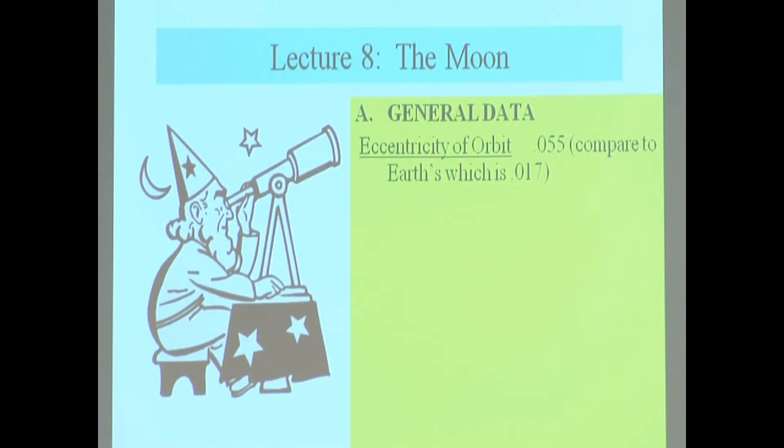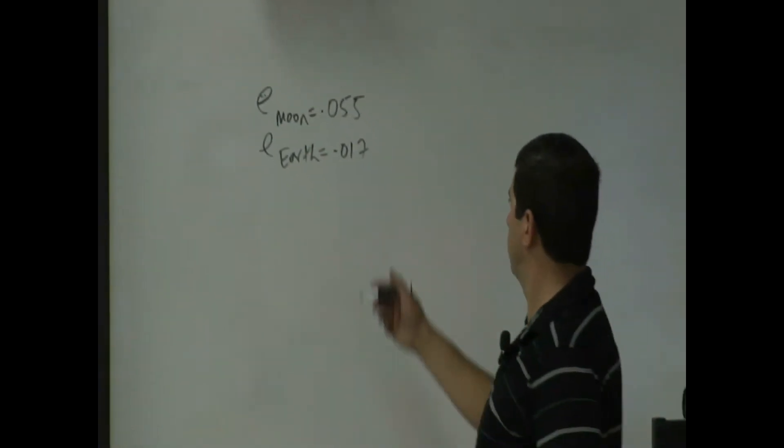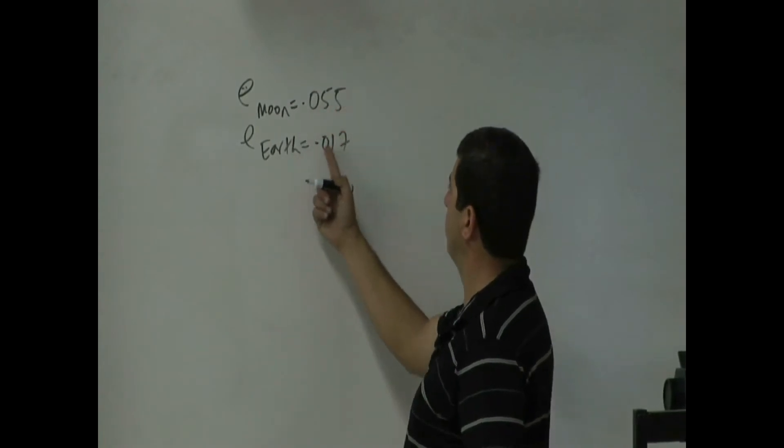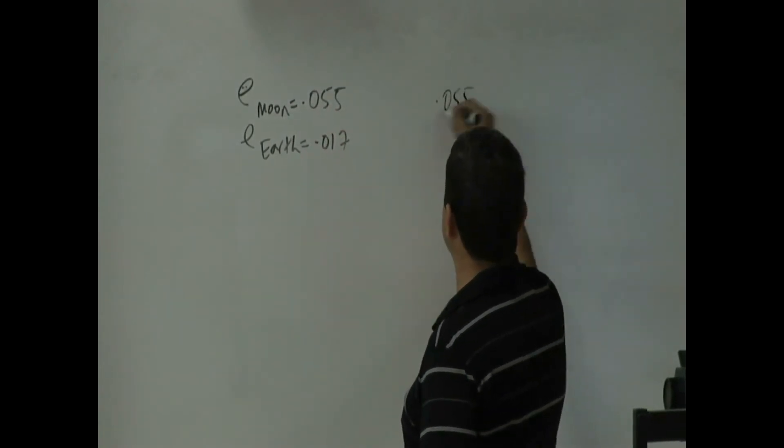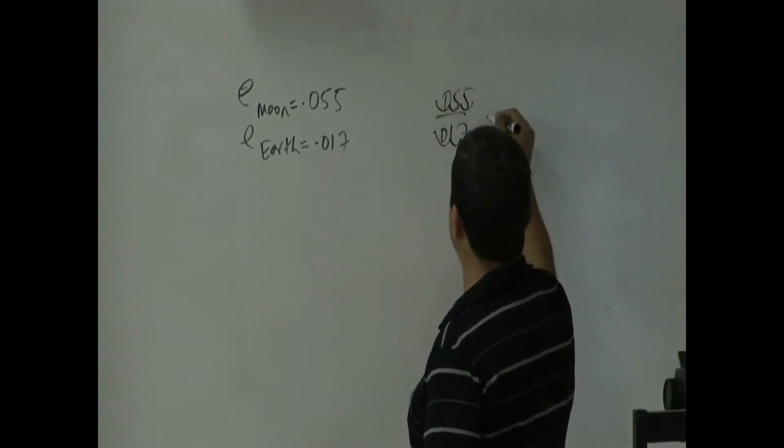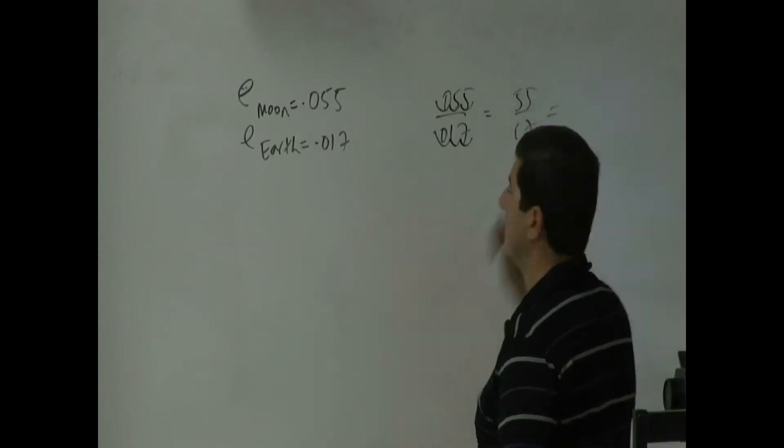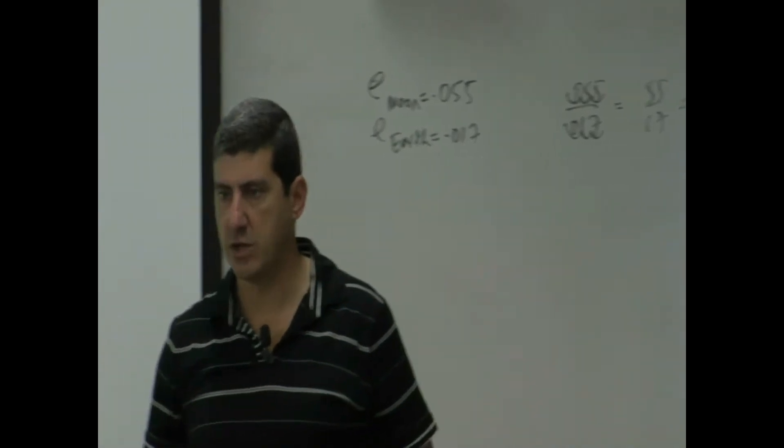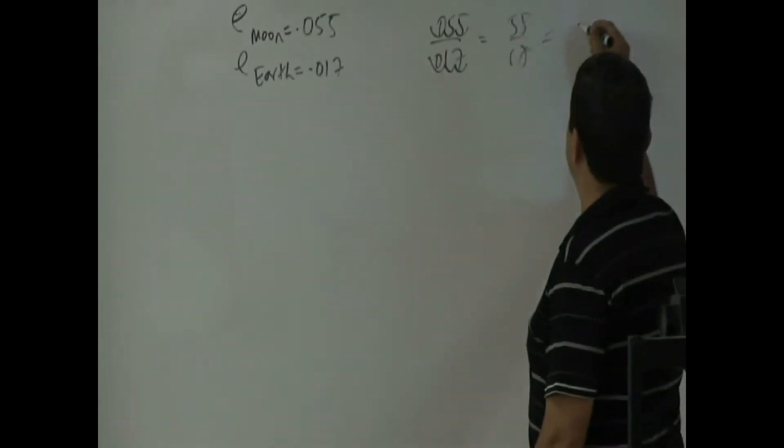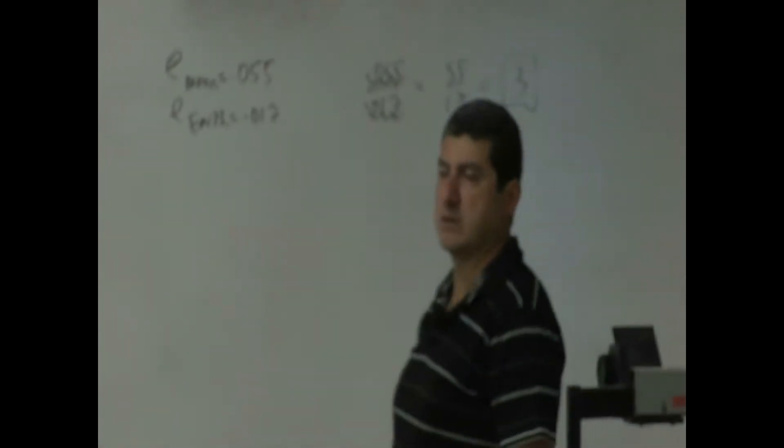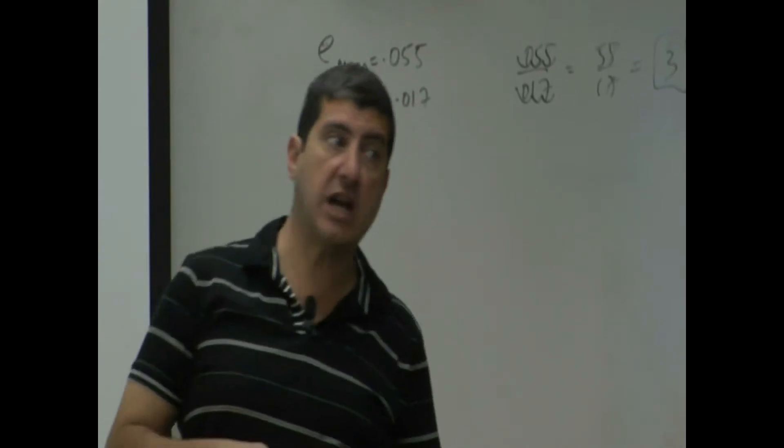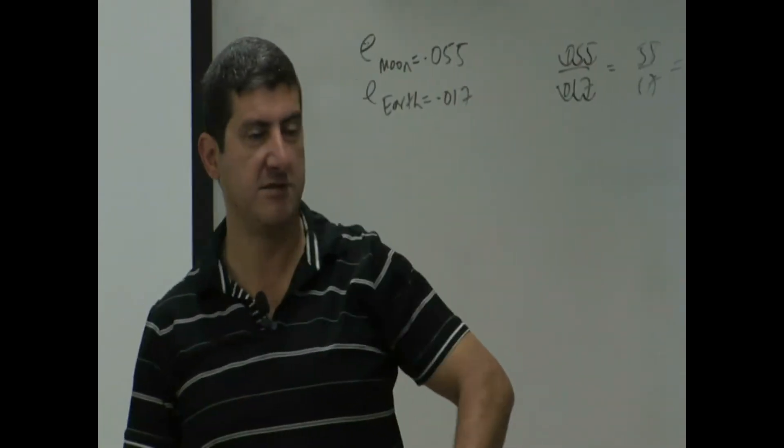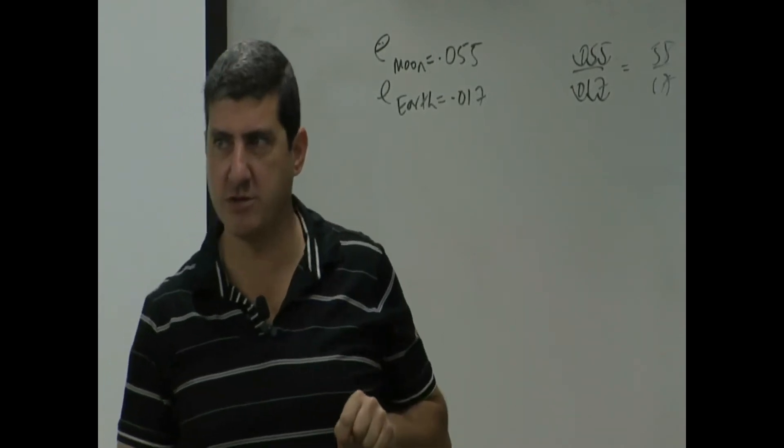The eccentricity of the moon is 0.055. The eccentricity of the Earth, 0.017. Which one is a bigger number? If you divide them, you get 55 over 17. 55 is bigger than 17. How many times bigger? About three times bigger. So that means the moon's orbit is three times more elliptical than Earth's orbit.